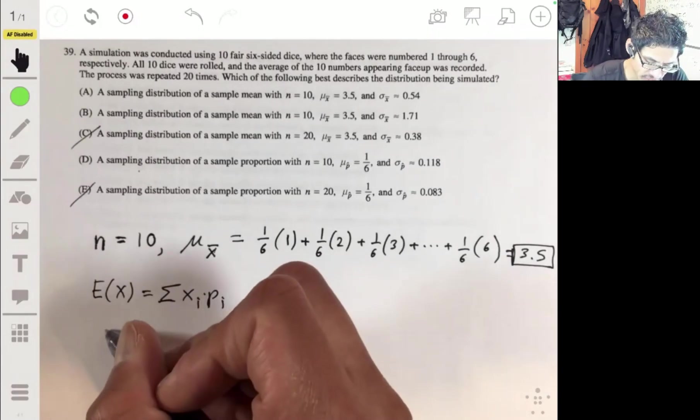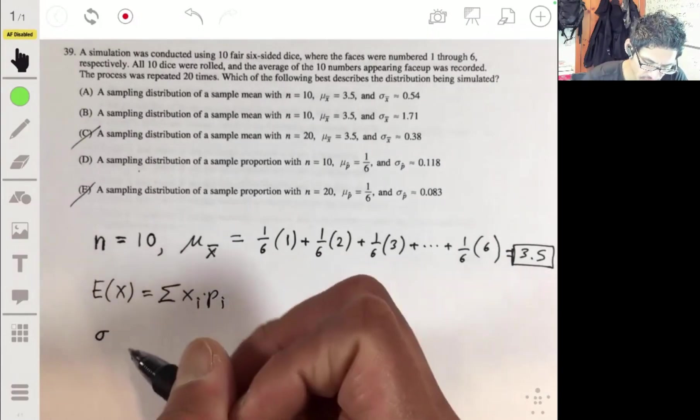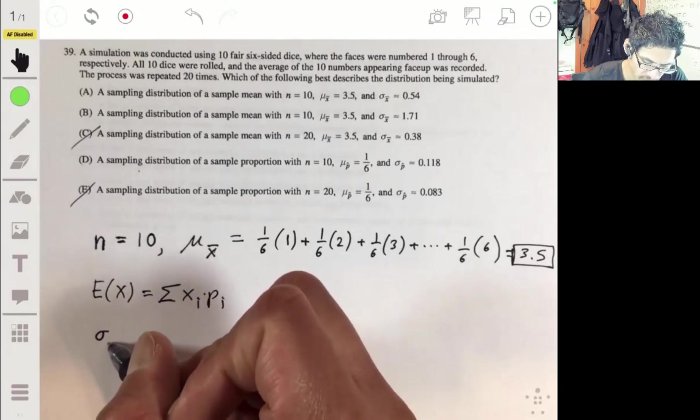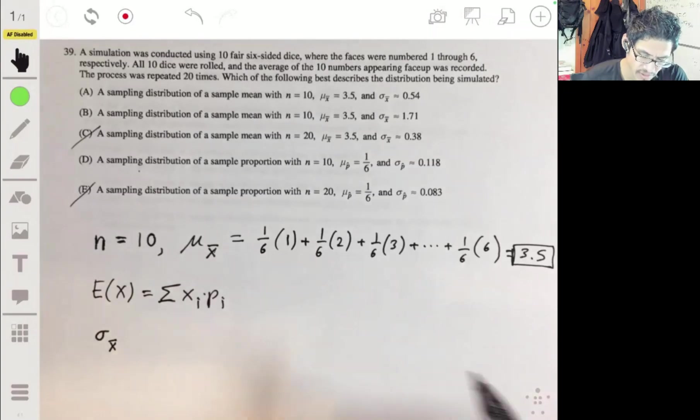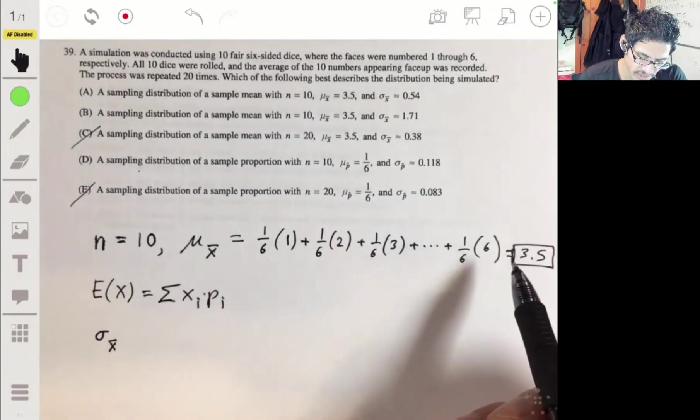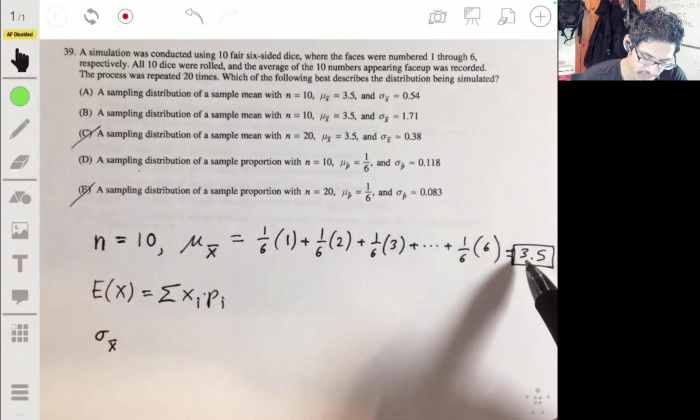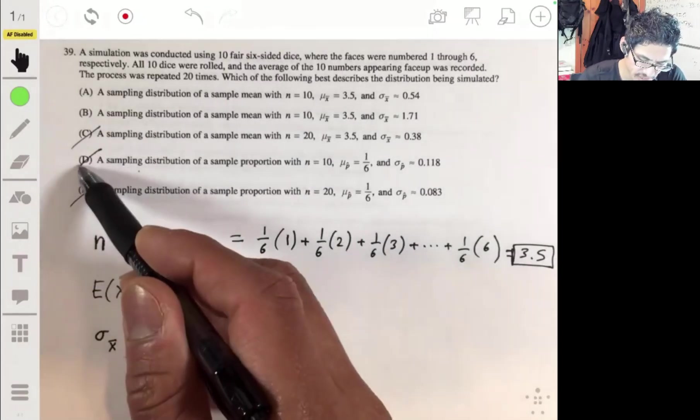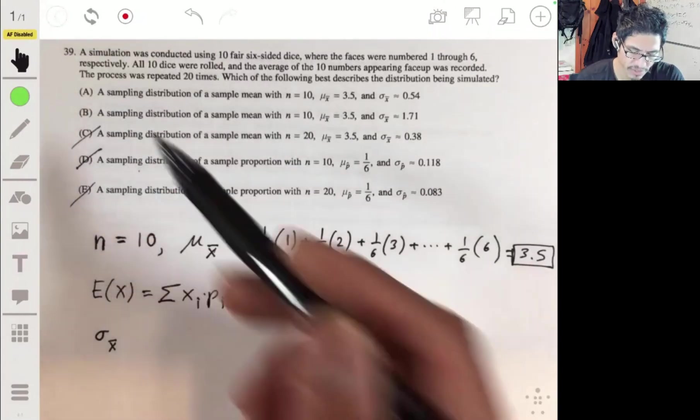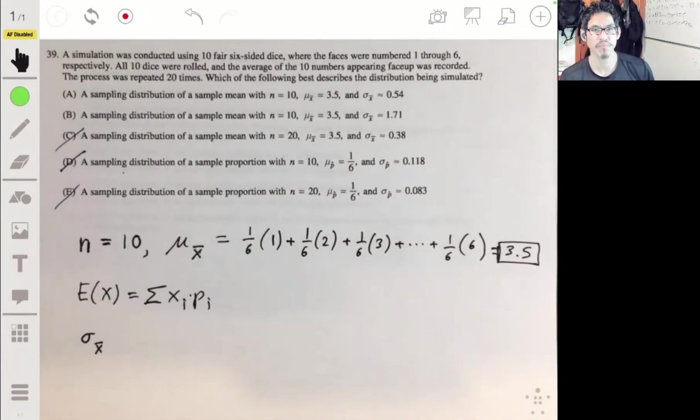Now, the last thing we need to figure out is the standard deviation of the sampling distribution of X bar. Knowing that it's 3.5 eliminates D. Now we're just down to A and B. You got a 50-50 shot here.